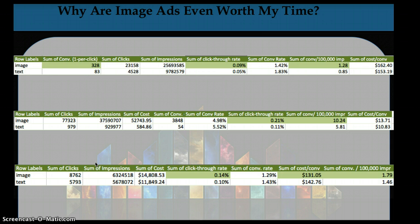You see a higher click-through rate in all three of these accounts for image ads — image ads are always going to have a higher click-through rate than text ads. The other metric that is higher for image ads in all three accounts is sum of conversions per 100,000 impressions. That's an important metric because if you just look at conversion rate, it's really misleading. You could see that text has a higher conversion rate — 1.83 compared to 1.42 for that first table — and think text is better, but it's really not because the click-through rate is so much lower.